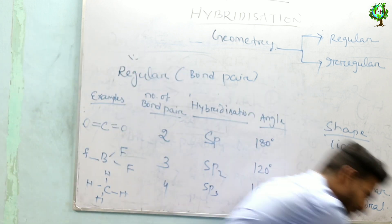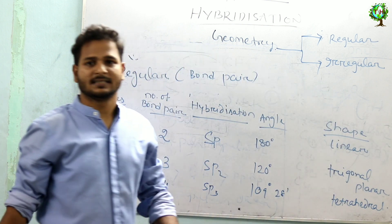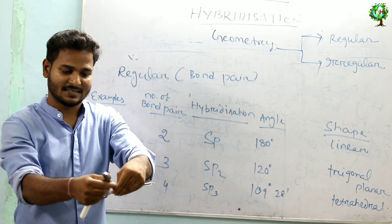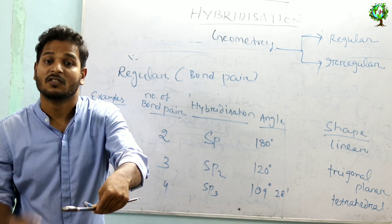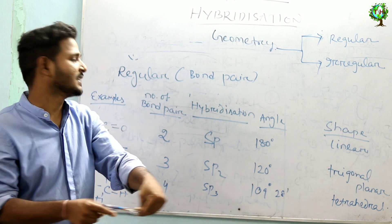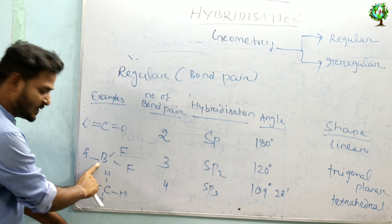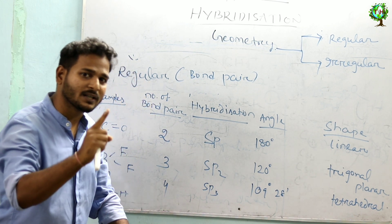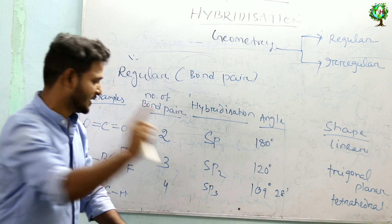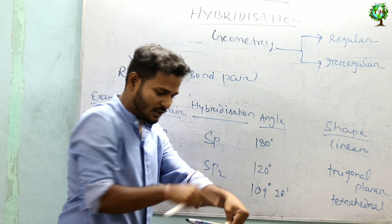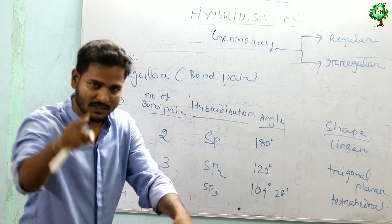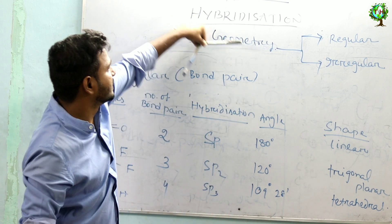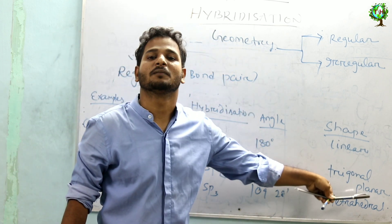If you take three bond pairs — for example BF3, that molecule has three bond pairs — the hybridization is SP2. The angle turns to 120 degrees for maximum separation and least repulsion. This forms a triangle in a plane, so the shape is trigonal planar.